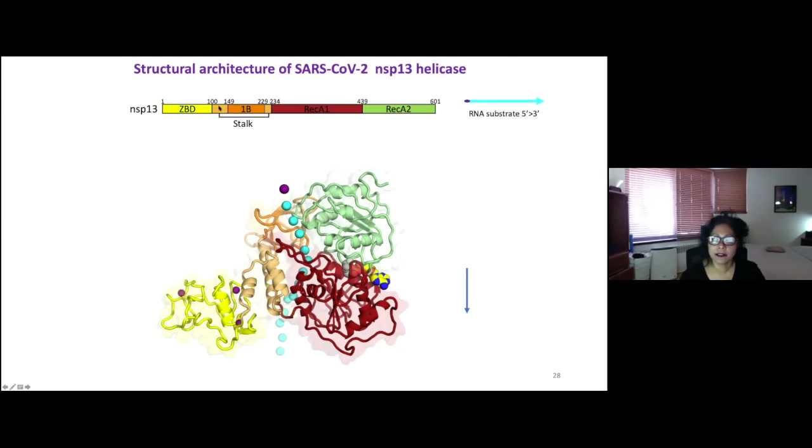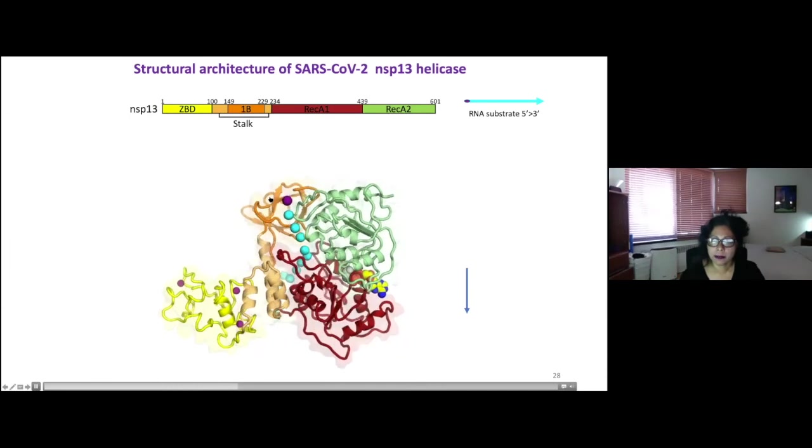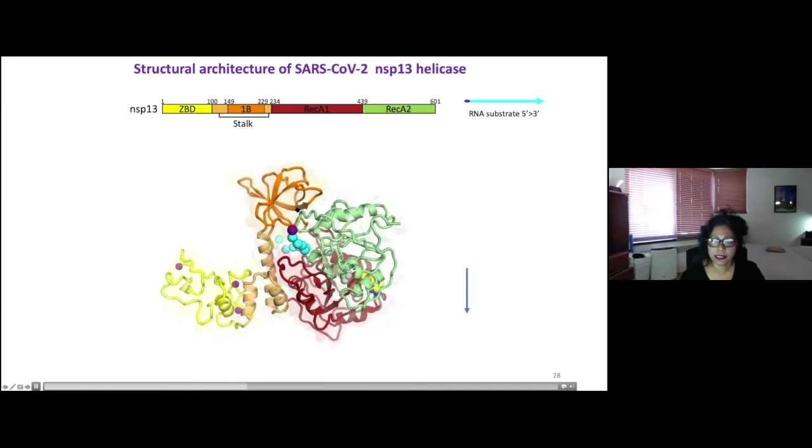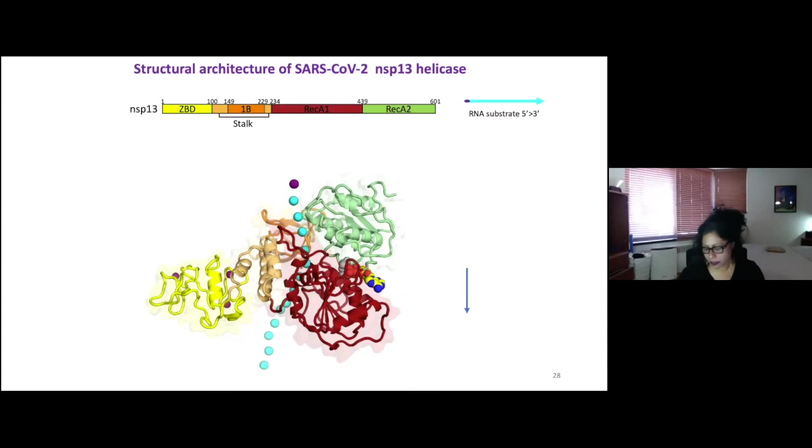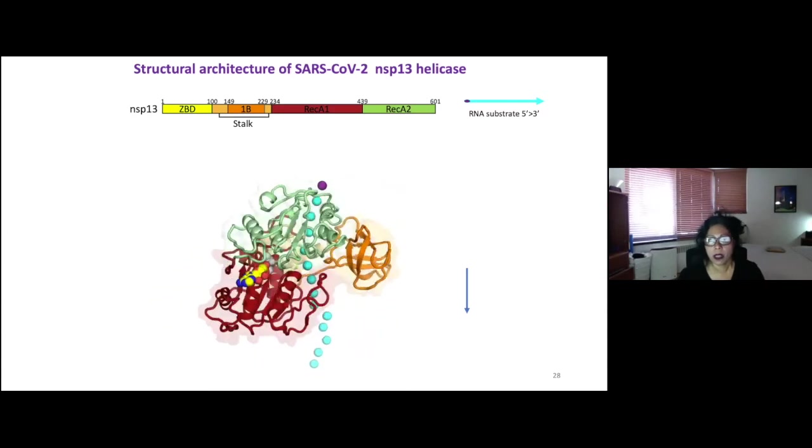There are two extra domains that are found in this family of helicases, the stalk and the 1B, and they're specific to this group of helicases. These are some of the specific domains I was talking about. They sort of form a wall to keep the substrate RNA in.